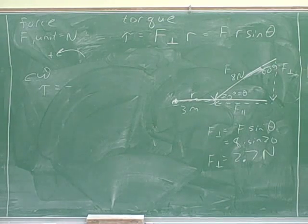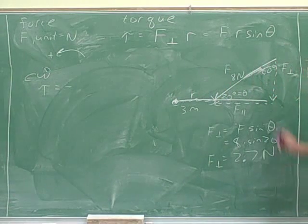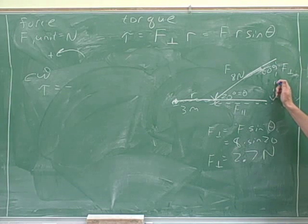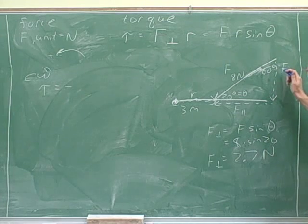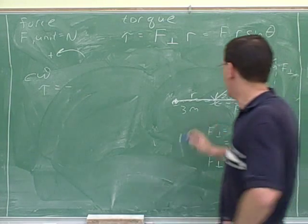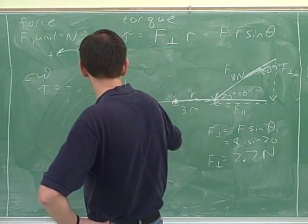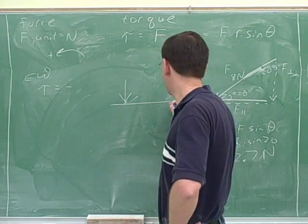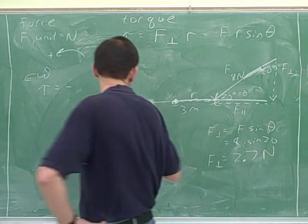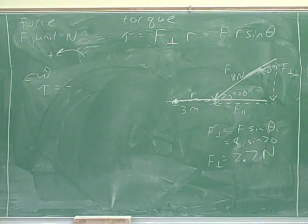So notice that some people might say, oh, this is negative because this is pointing it downwards. Well, that has nothing to do with it. We're not thinking in terms of linear here. It's not that this is down, it's clockwise. A downward force over here would cause a counterclockwise movement around this point, which would be positive. So again, we can't confuse linear and rotation.